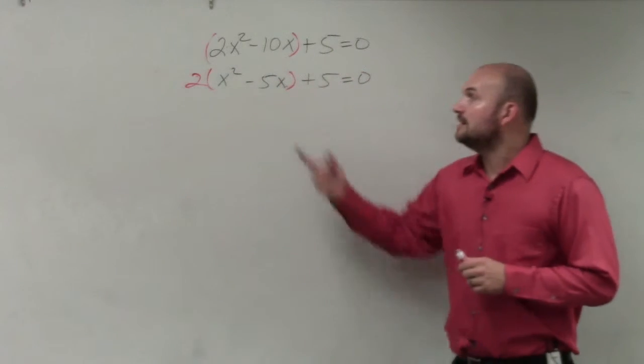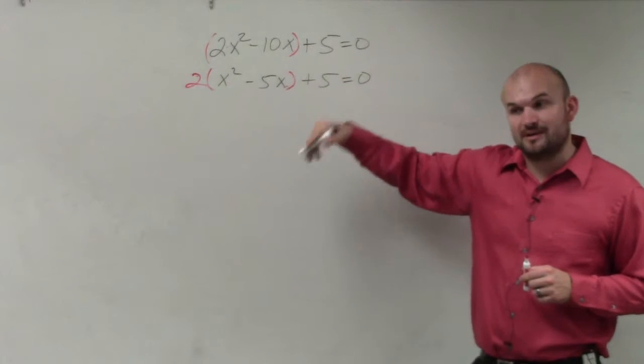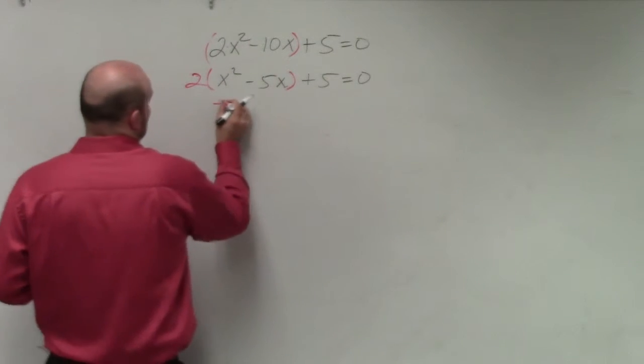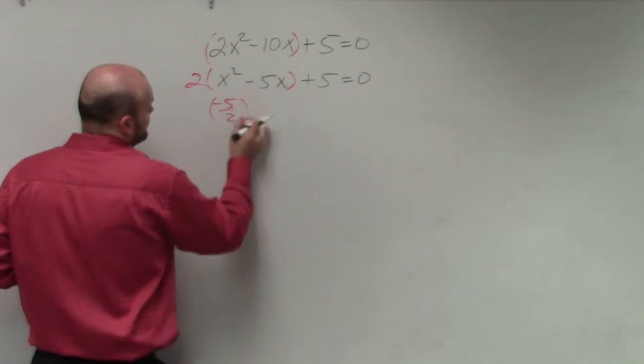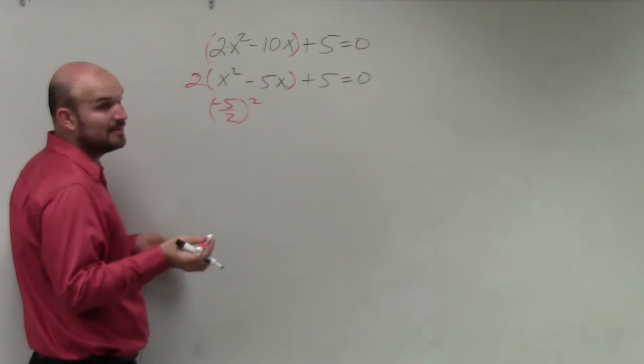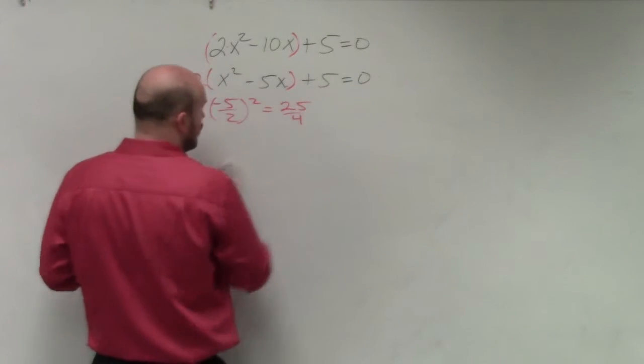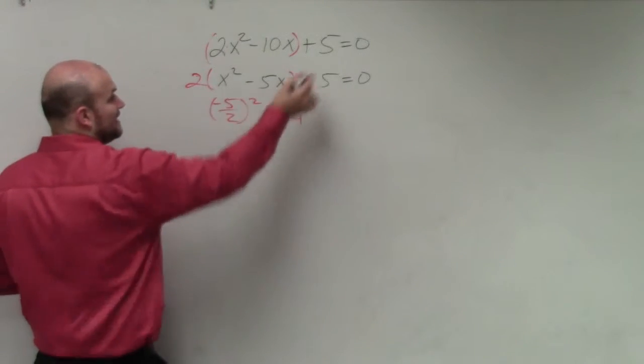Right? In this case, we're going to take our middle term, divide it by 2, and square it. So you have negative 5 divided by 2 squared. Negative 5 divided by 2 does not divide into negative 5, so that's going to be a 25 over 4. We're going to add that and then subtract it outside.